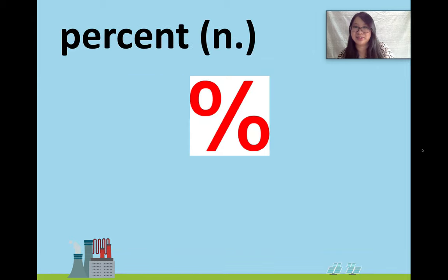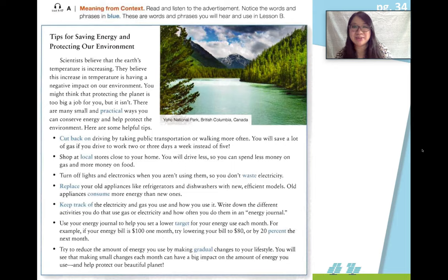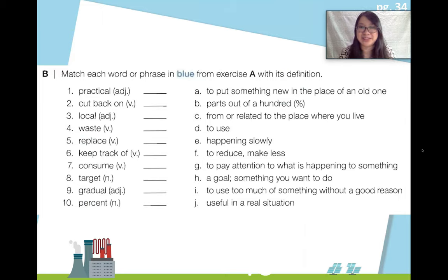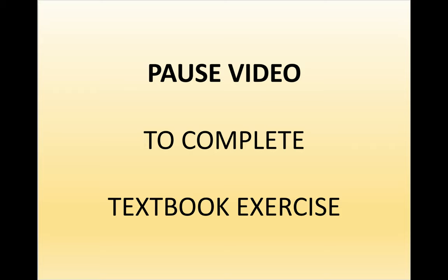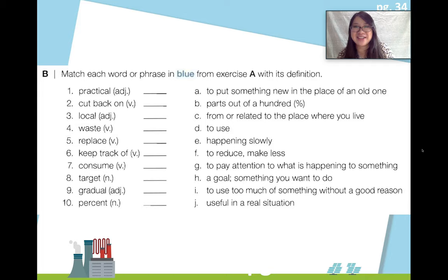Finally: percent. Researchers in Iceland say that 50% of patients with coronavirus did not show any symptoms. Now we have some more examples of the vocabulary in context. Please read this example in your notebook — if you don't have the textbook, you can read it from the PowerPoint. After you finish reading all of the words in context, please continue to exercise B and match the words with their definition. When you come back, we'll check your answers.